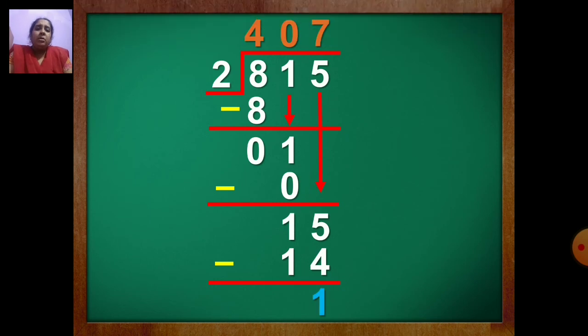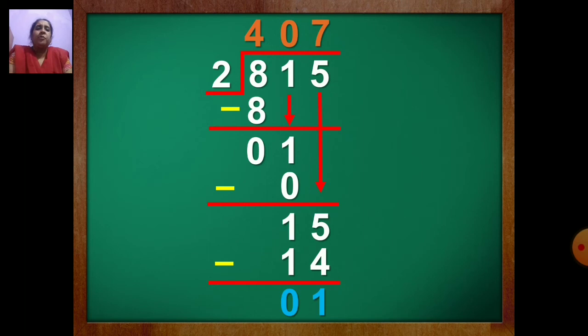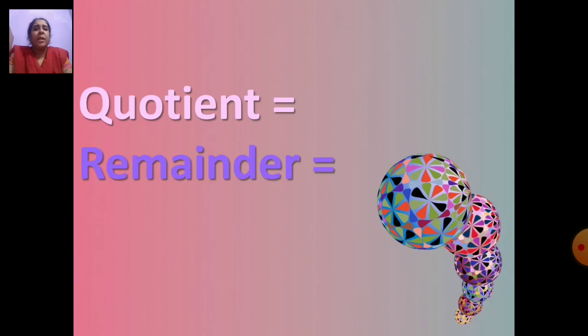Now what is the answer? 407 is the quotient. So you will write quotient and remainder here. Quotient is 407 and remainder is 1.